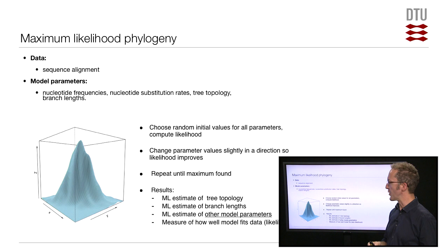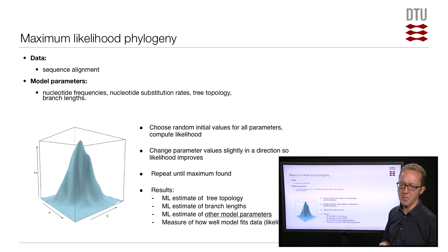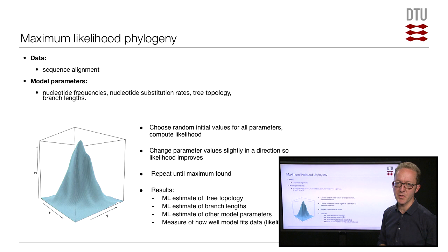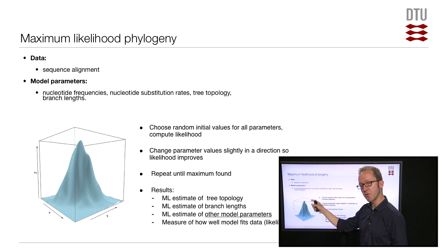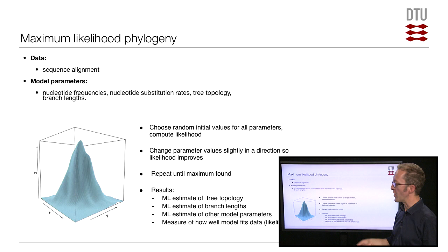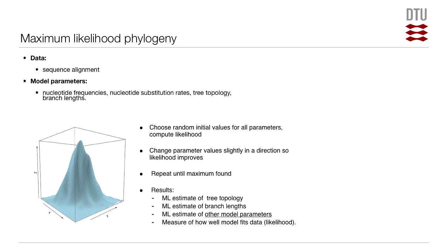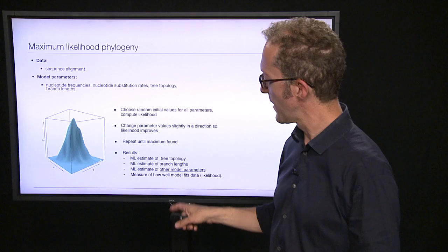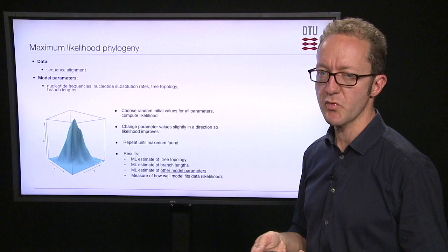This will be a local optimum — it's not guaranteed to be the global optimum. But if you start from a number of different places and always end up on the same peak, there's a good chance you've found the global maximum. At this point you will have found the maximum likelihood estimate of the tree topology, the branch lengths, and the other model parameters. And finally, you also have a measure of how well your model fits the data — namely the likelihood of this maximum likelihood estimate — which can be used in model selection.